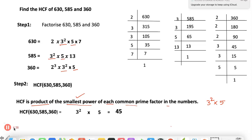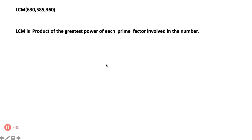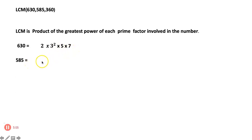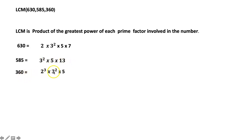Now let us find the LCM of 630, 585, and 360 using the same example. We already calculated the prime factorizations: 630 = 2 × 3² × 5 × 7; 585 = 3² × 5 × 13; and 360 = 2³ × 3² × 5.